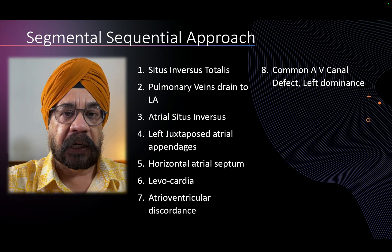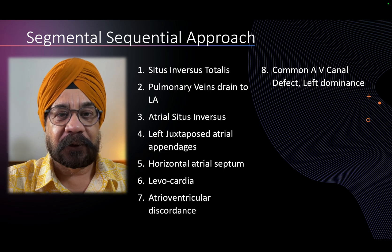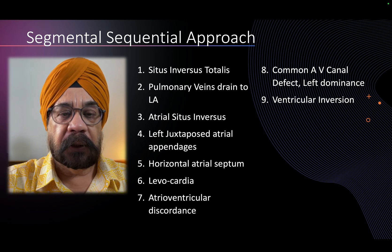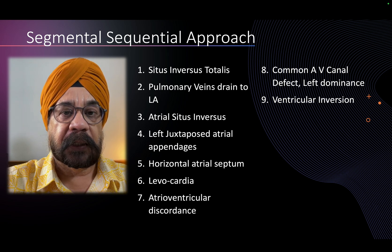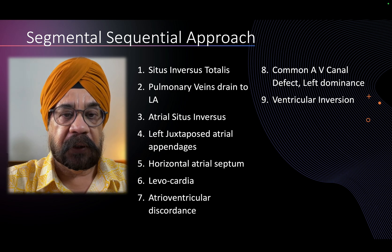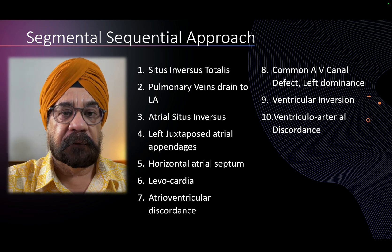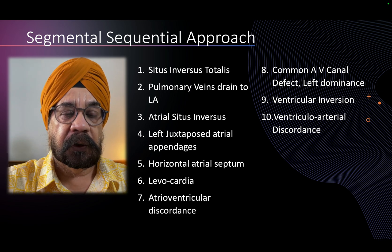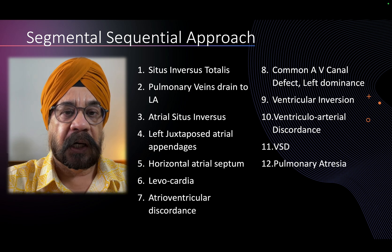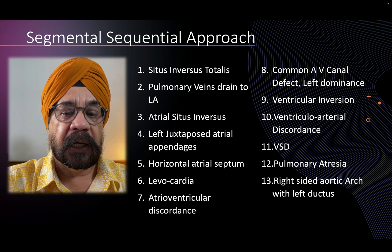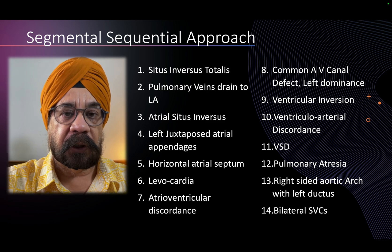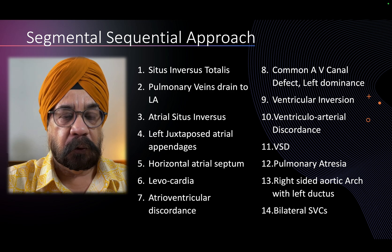After the atria, you describe the ventricular connections: there was atrioventricular discordance — the left atrium was connected with the morphologically right ventricle. There was a common AV valve with dominance of the left side. There was ventricular inversion — a D ventricular loop, when we expected an L ventricular loop in situs inversus. Then ventricular-arterial discordance: the aorta arising from the right ventricle, a large VSD, pulmonary artery filling retrogradely from the ductus arteriosus — pulmonary atresia. And bilateral SVCs with a right-sided aortic arch with left ductus.